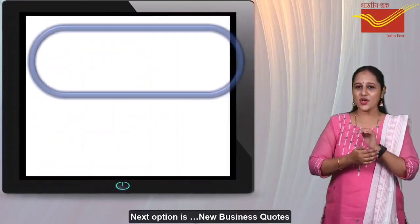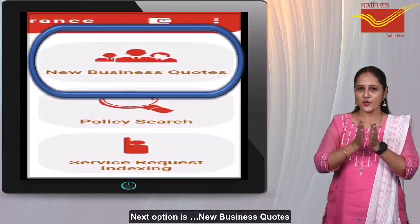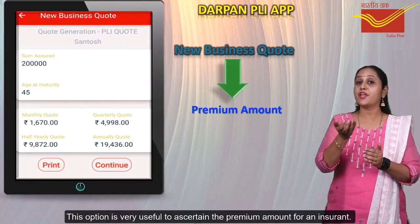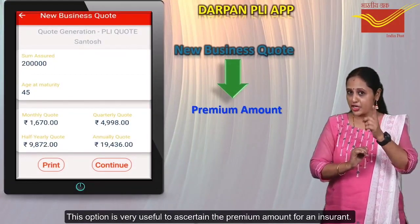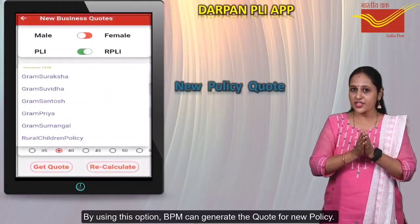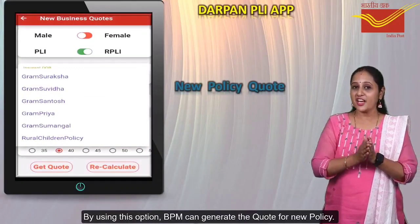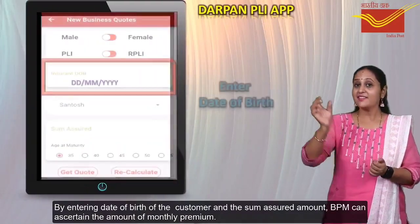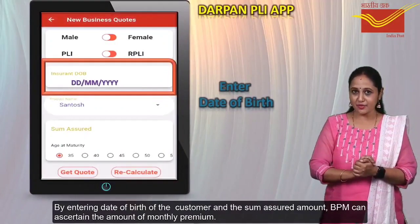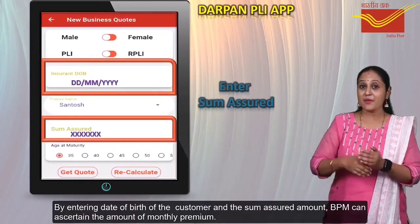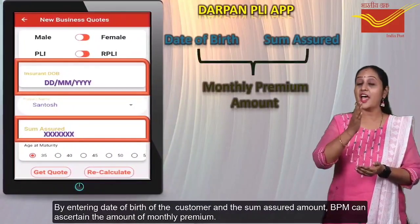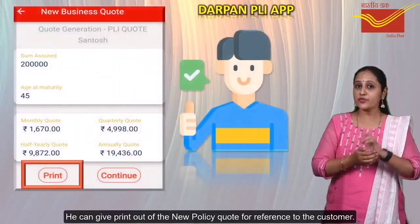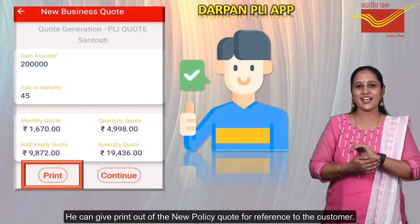The next option is New Business Codes. This option is very useful to calculate the premium amount for an insuring. By using this option, BPM can generate the code for the new policy. By entering the date of birth of the customer and the sum-assured amount, BPM can calculate the amount of monthly premium and give a printout of the new policy code for reference to the customer.